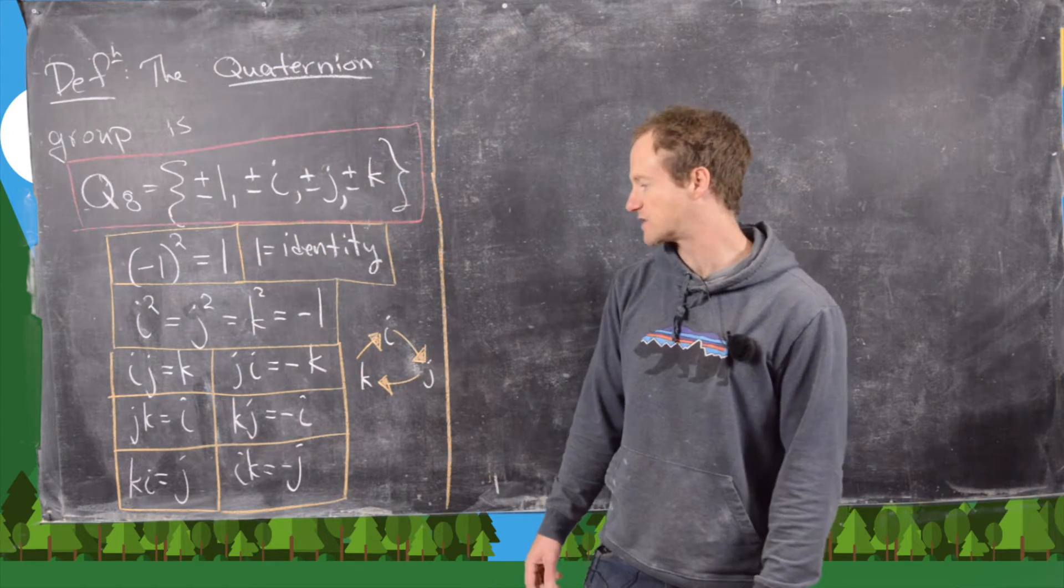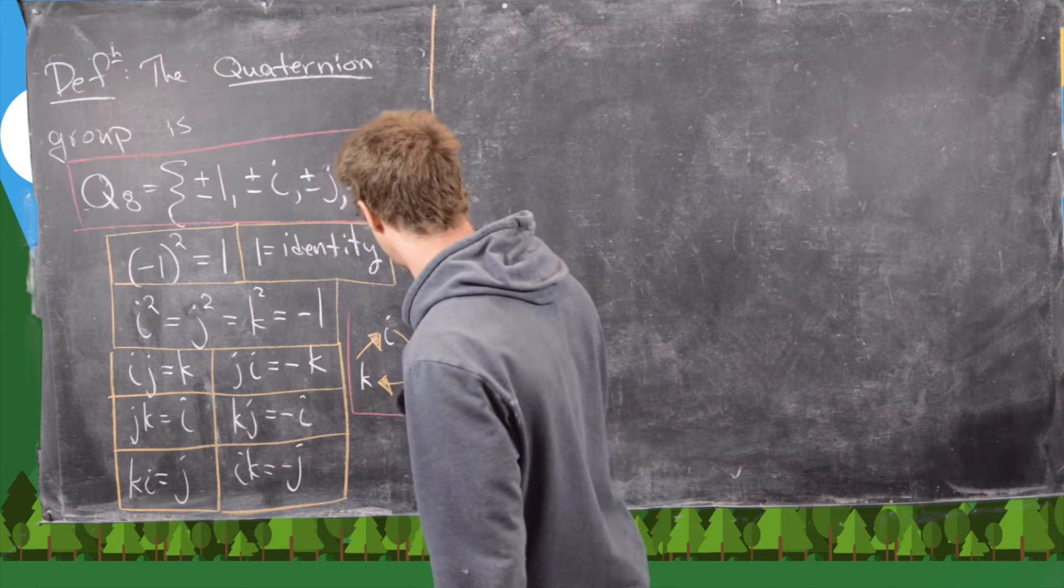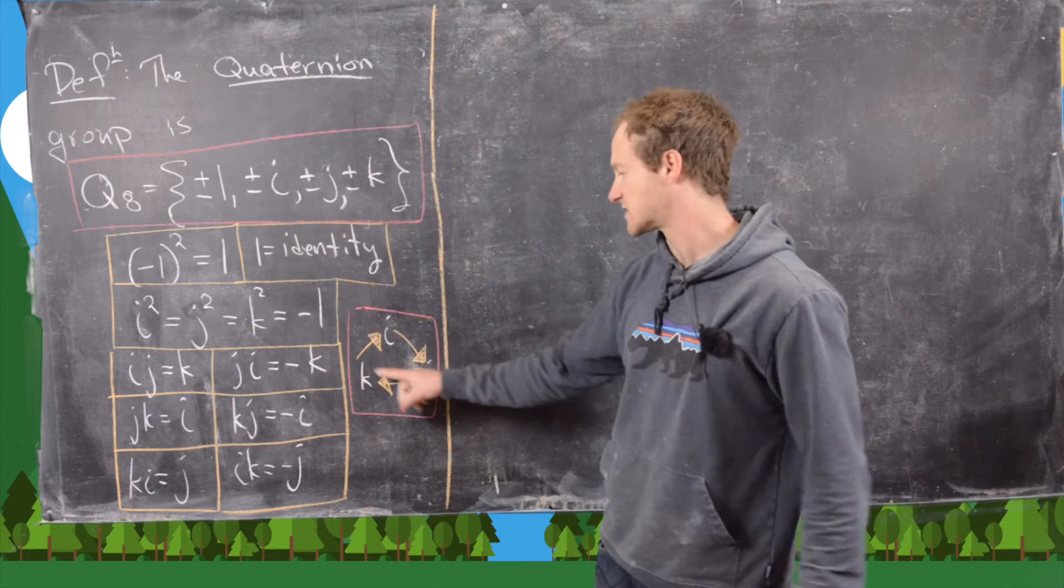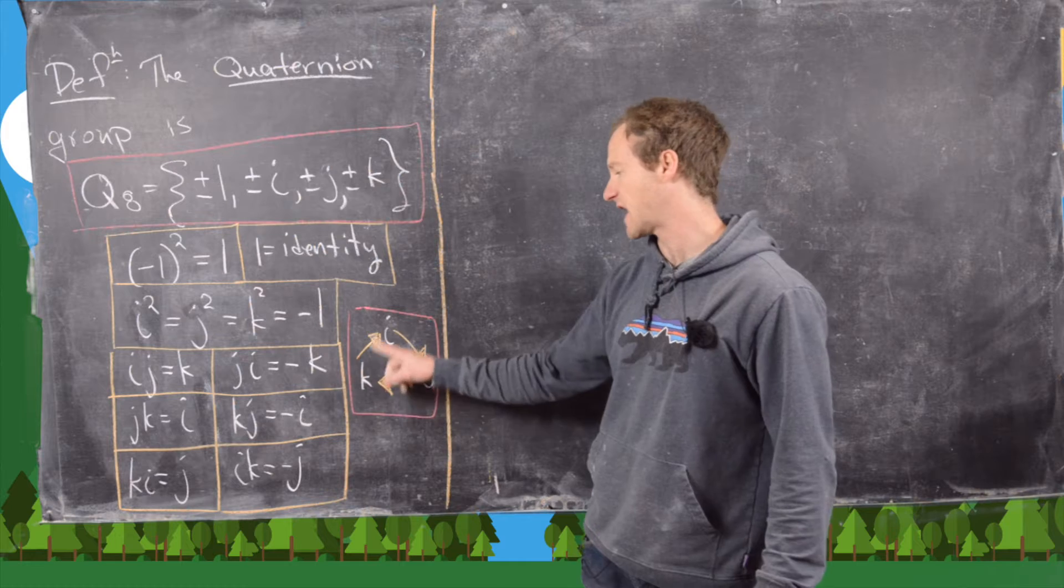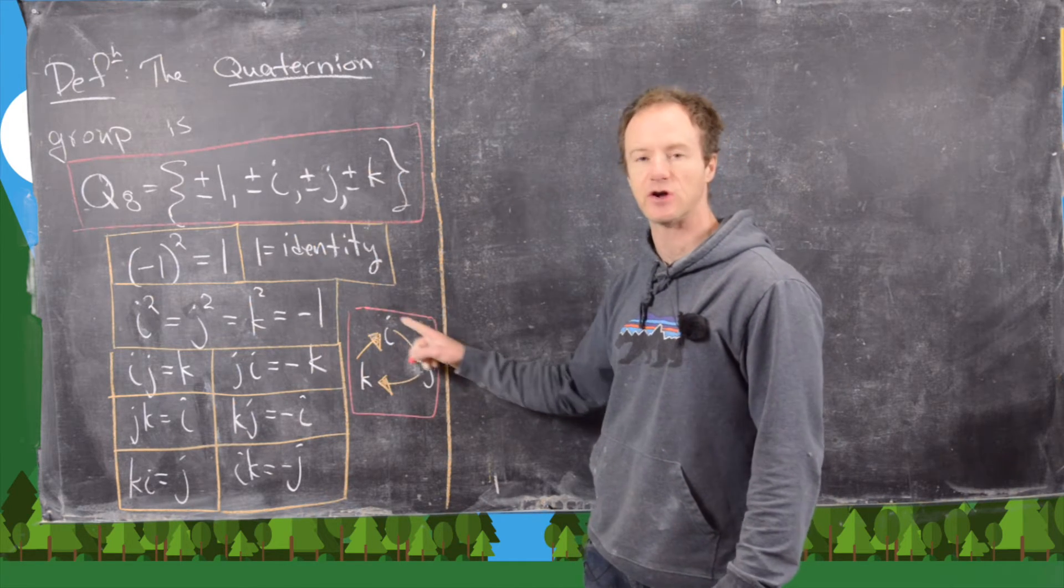But there's actually a much easier way to remember that, and that's with the following picture. So this picture is this loop from i to j to k. And if you follow the arrows, so in other words, if you go clockwise,